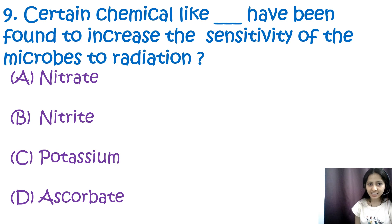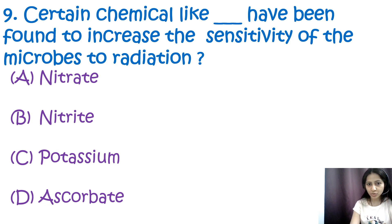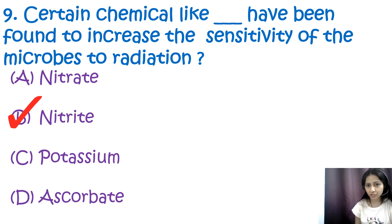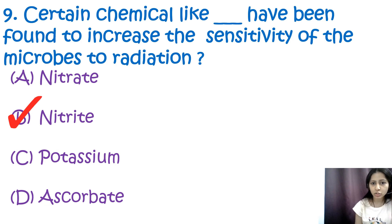Question 9: Certain chemicals like blank have been found to increase the sensitivity of microbes to radiation. Options are nitrite, nitrate, potassium, and ascorbate. The correct answer is B, nitrite. Nitrites increase the sensitivity of microbes to radiation because when nitrites are exposed to radiation they produce certain reactive species that cause damage to cellular components such as DNA, making the microbe more susceptible to the damaging effects of radiation.